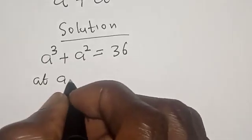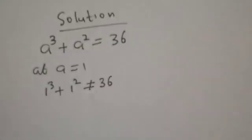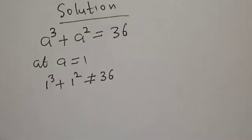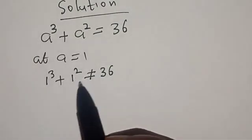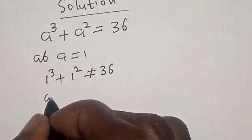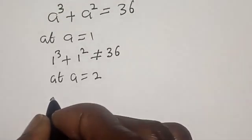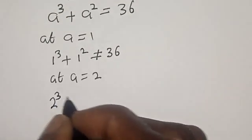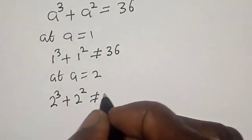At A equal to 1, one raised to power 3 plus one squared is not equal to 36. Let's check at A is equal to 2. Two raised to power 3 plus two squared is also not equal to 36.